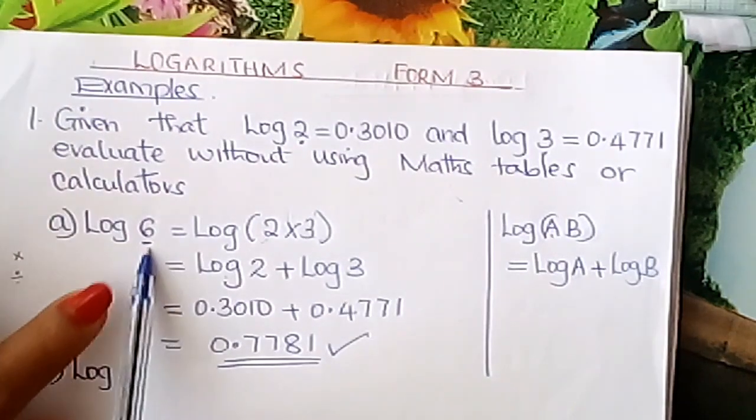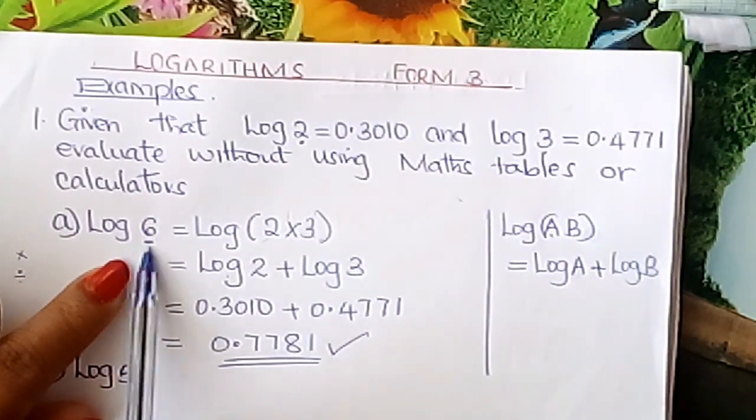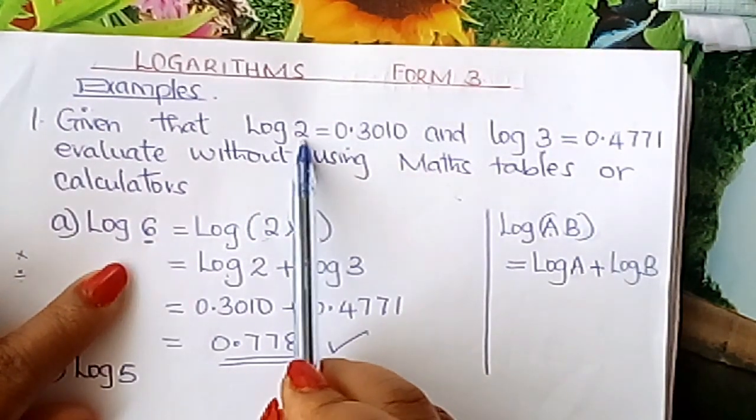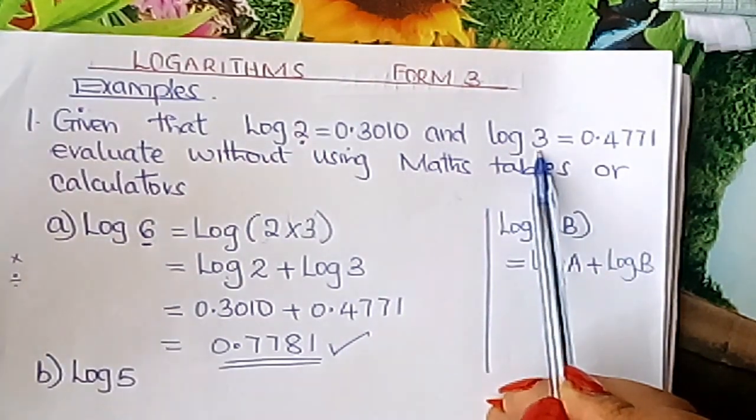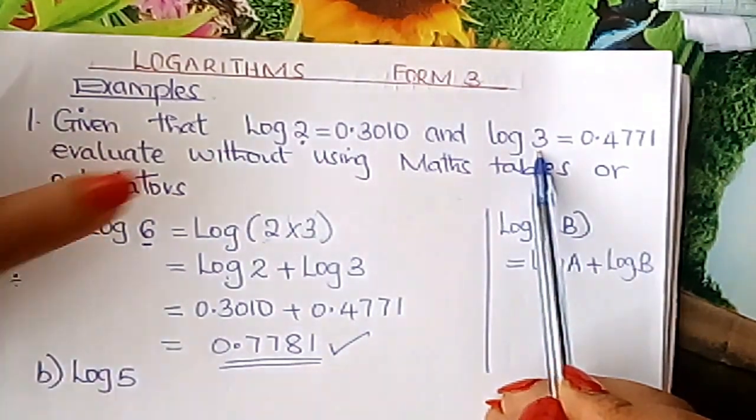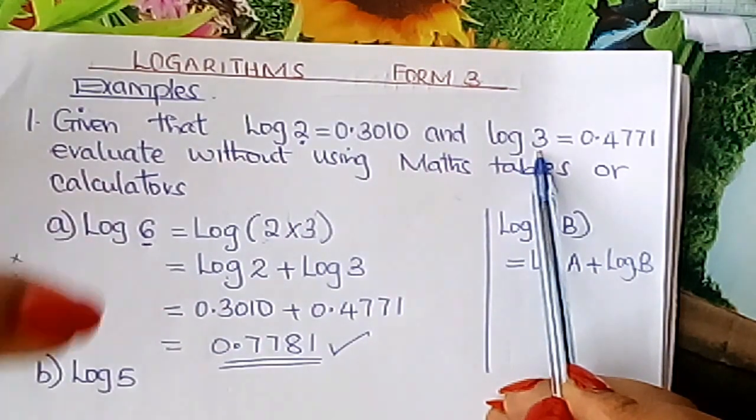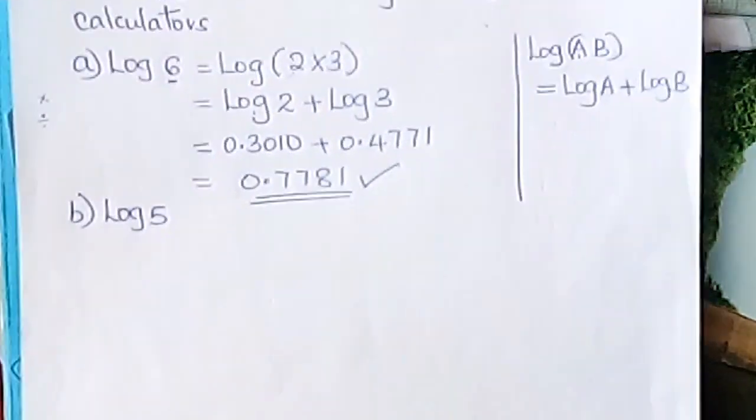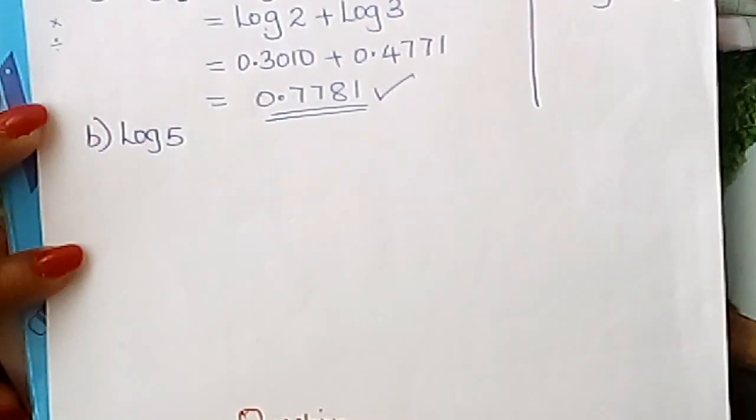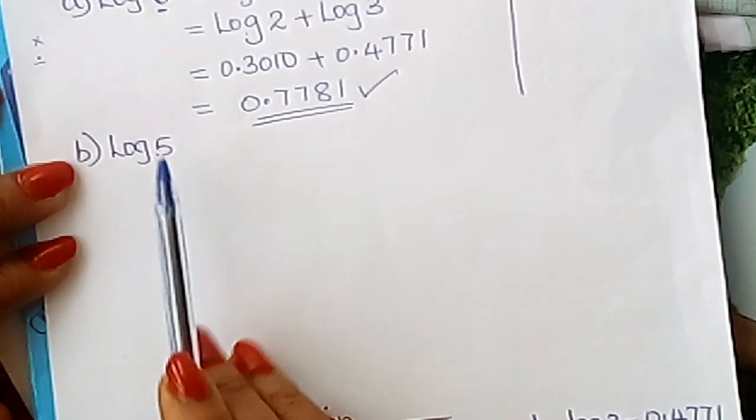The hint is express this number here in terms of this number which is there and that number is there. And it is a matter of either multiplying or dividing. We go to the second one here and learn, log 5.